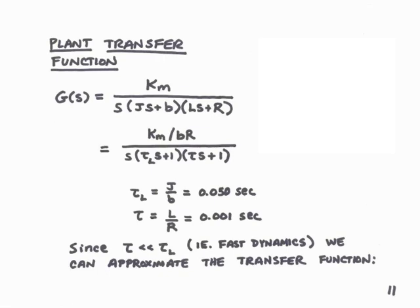And the denominator will have S times tau sub L s plus 1 times tau s plus 1, where tau sub L and tau are time constants associated with these dynamics.